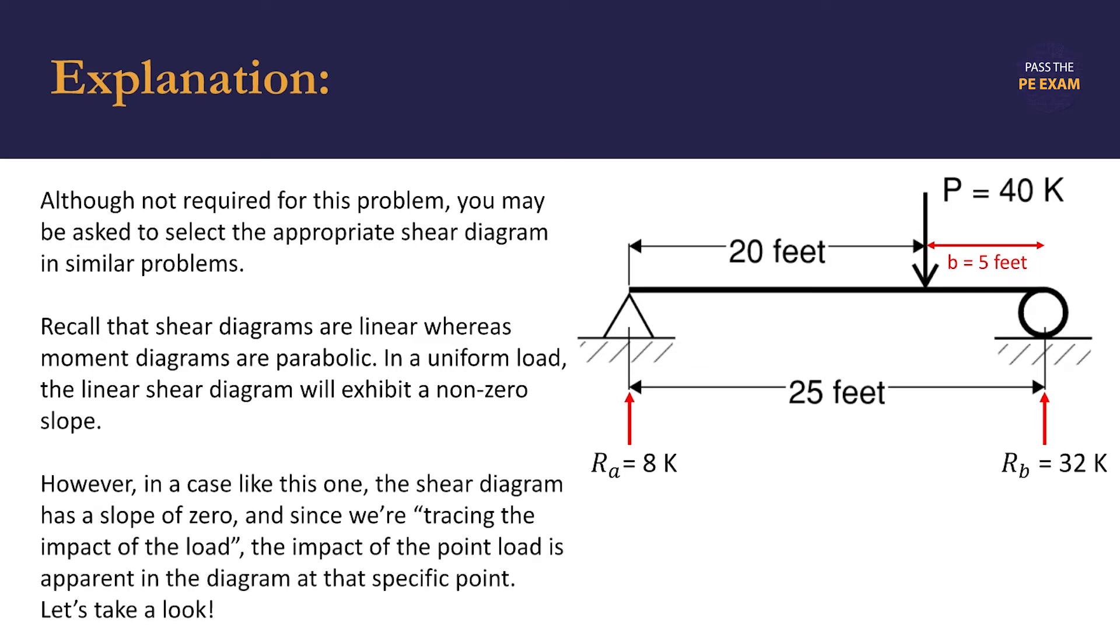But in this case, because we only have one point load, we'll see a shear diagram where the line has a slope of zero. Since we're tracing the impact of the load, the point load's impact will be apparent in the diagram at that specific point, and we'll see the horizontal line shift downward.